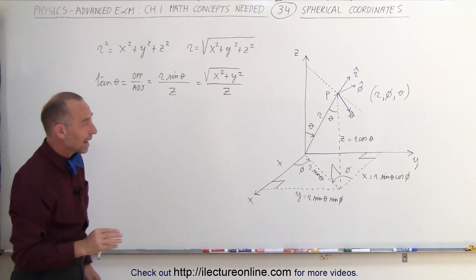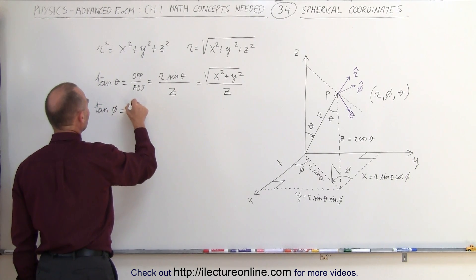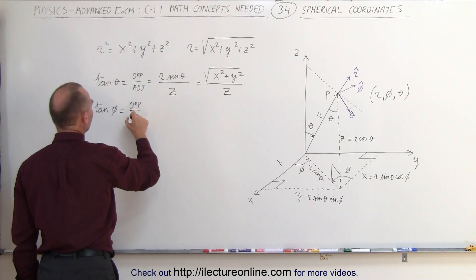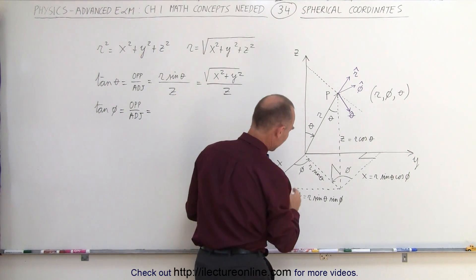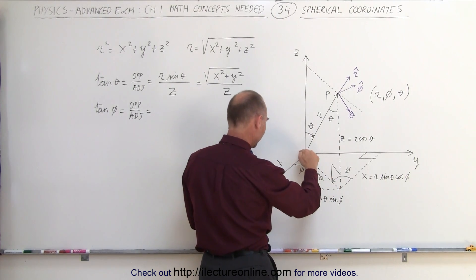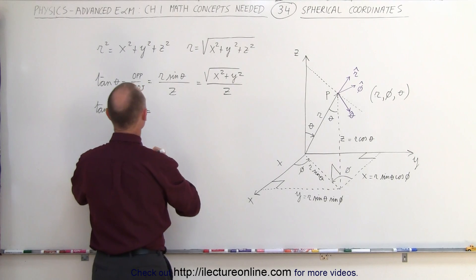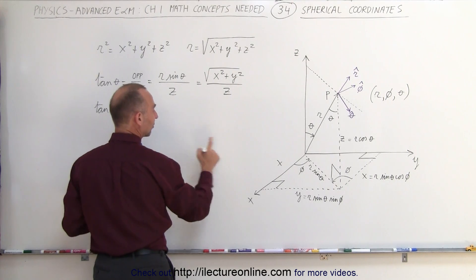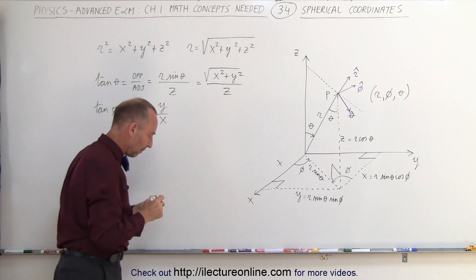Now we'll do the same with the angle phi. The tangent of phi also equals the opposite divided by the adjacent side. The opposite side to phi is y and the adjacent side is x. Therefore the tangent of phi equals y divided by x.